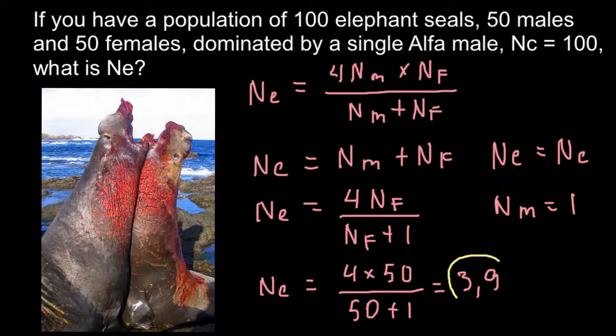And what does this number mean? This is our answer today. And this means that, actually, effective population size would be only 4. That means that those number of elephant seals in this population is 100, but it equals only to 4 animals that participate in breeding.